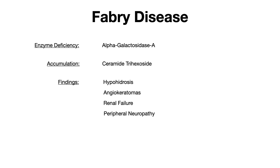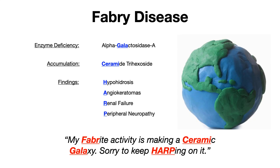Very high-yield findings for Fabry disease include hypohidrosis, angiokeratomas, renal failure, and peripheral neuropathy. The mnemonic is: 'My favorite activity is making a ceramic galaxy — sorry to keep harping on it.' 'Favorite' reminds you of Fabry disease. 'Ceramic' is ceramide trihexoside. 'Galaxy' — the 'gala' part — reminds you of alpha-galactosidase. And 'harping on it' — H-A-R-P — gives you hypohidrosis, angiokeratomas, renal failure, and peripheral neuropathy.